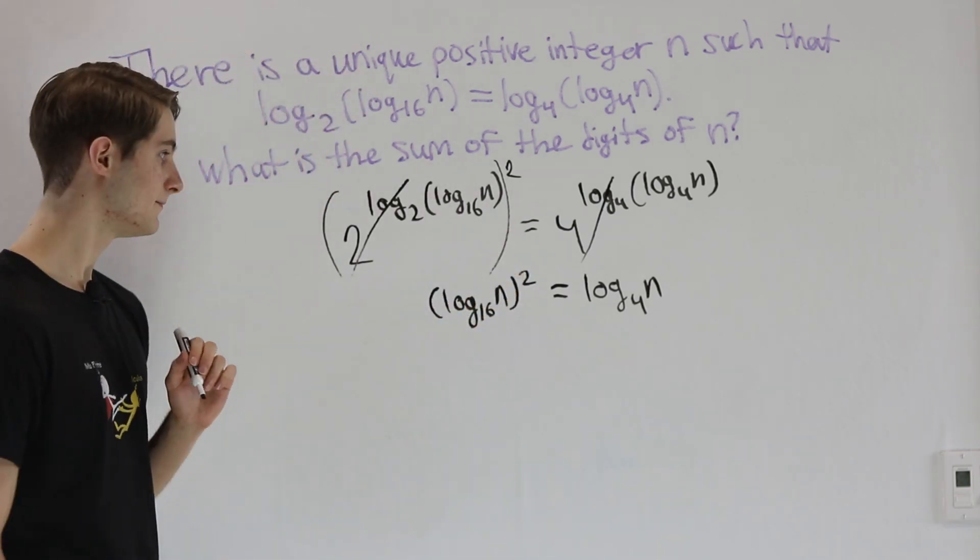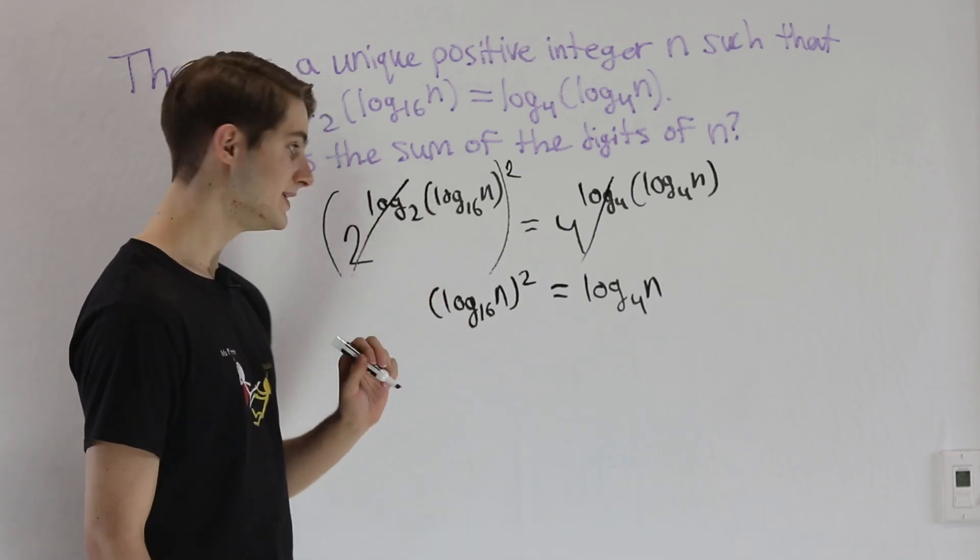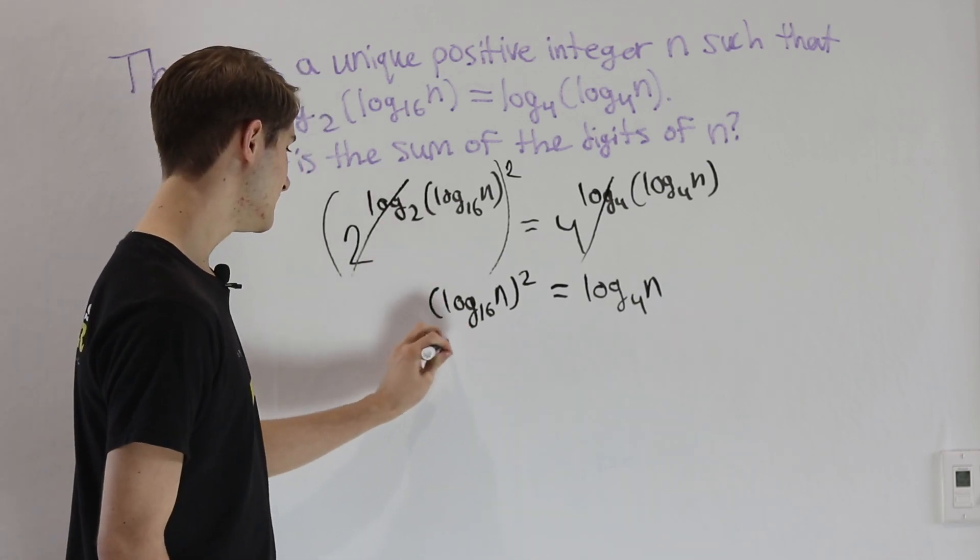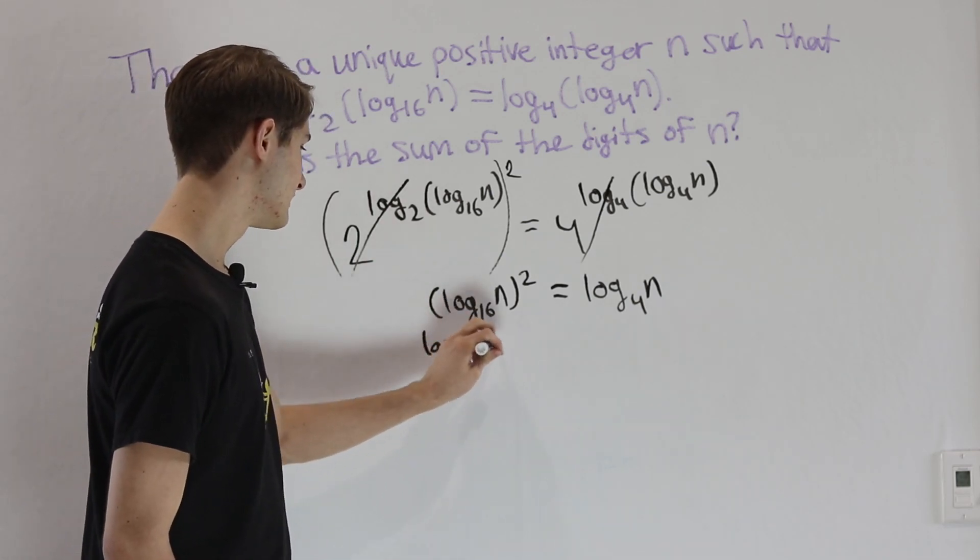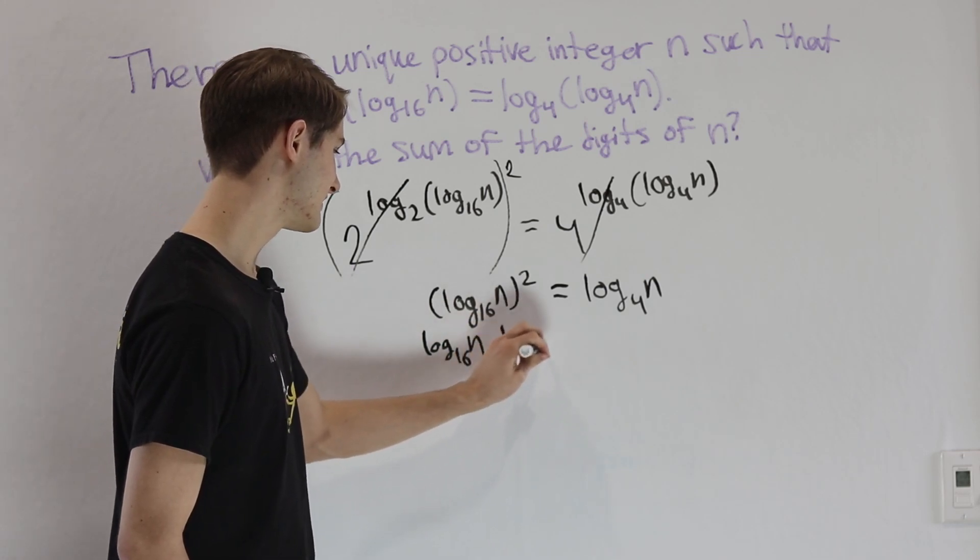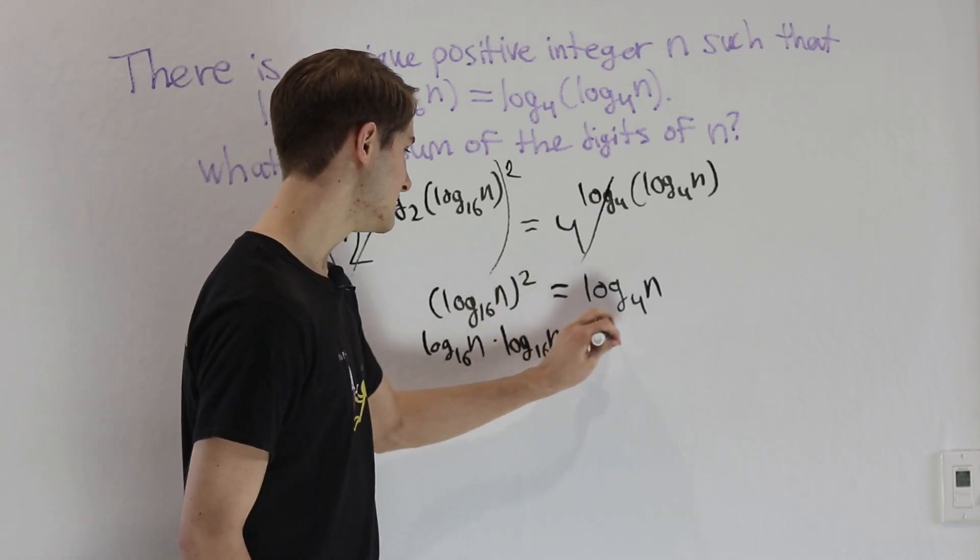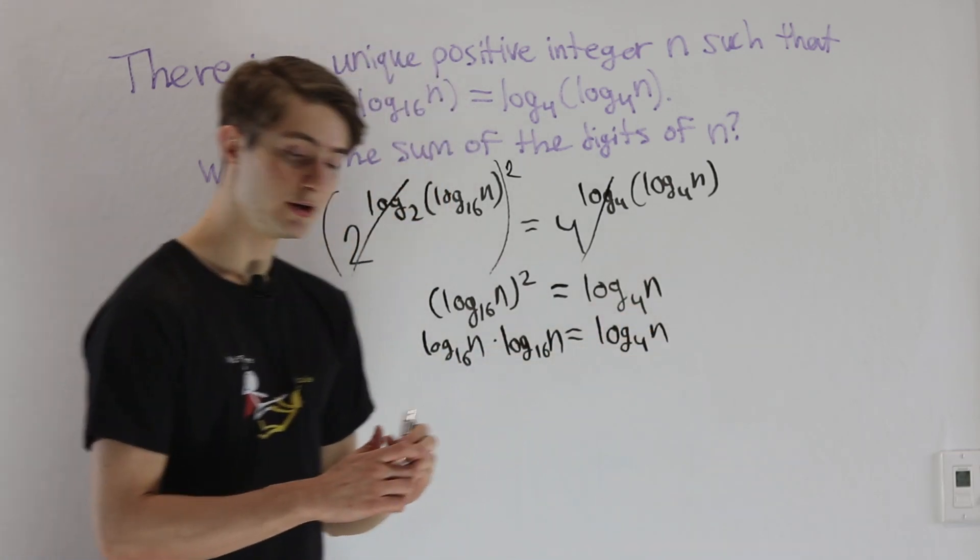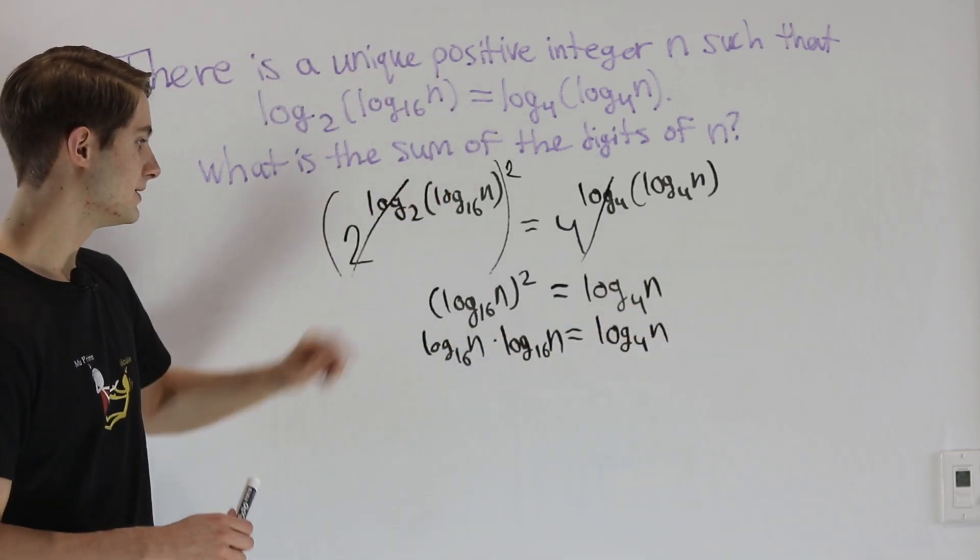From here, on the right side we have log base 16 of n times log base 16 of n. That's going to equal log base 4 of n. We're going to do the exact same thing that we did up here.